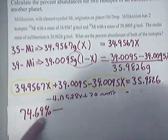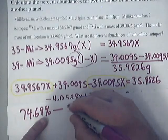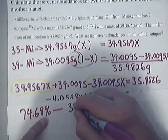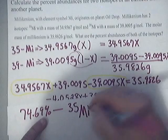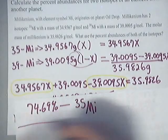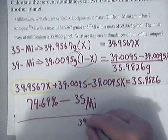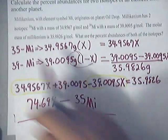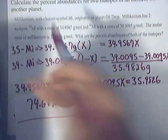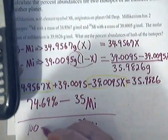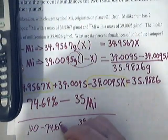So this 74.69 percent will be for the 35 MI. Now all you have to do to get the other one for the MI-39 is just basically subtract that from 100. So all you do is you go 100 minus the 74.69 percent.